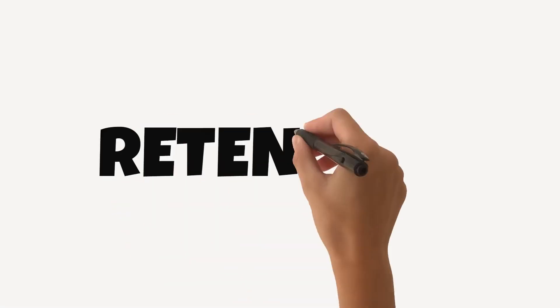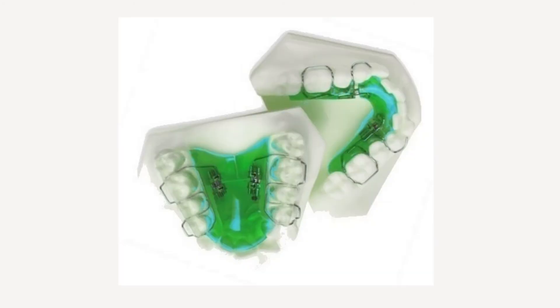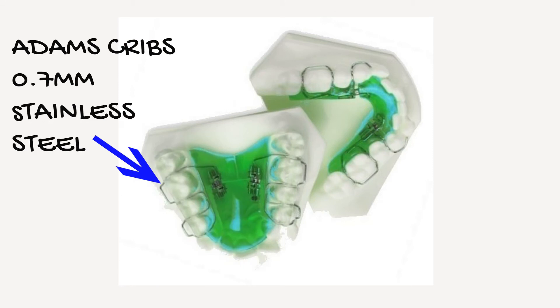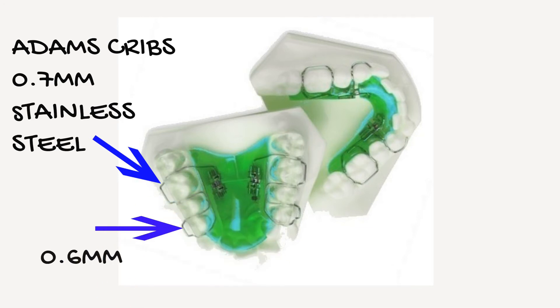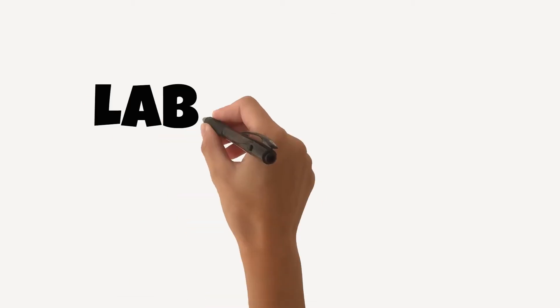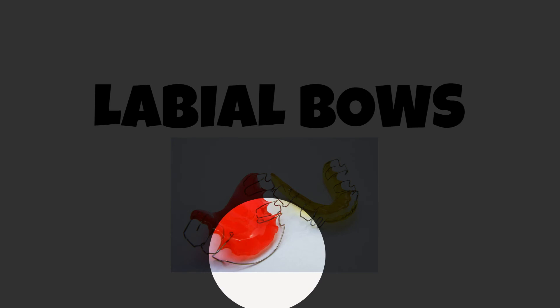Retention is very important because we don't want the appliance to fall out of the patient's mouth, as this will have a considerable effect on patient cooperation and compliance. The retentive components we use are, for example, an Adam's crib. These are approximately 0.7 millimeters in diameter and they're made from stainless steel wire, and they usually fit around the posterior teeth, usually the molars. You can also have 0.6 millimeter wires, which are great retentive components around premolars and primary molars. You can also have anterior retention, which is gained by a labial bow or a clasp, also constructed in 0.7 millimeter wire.